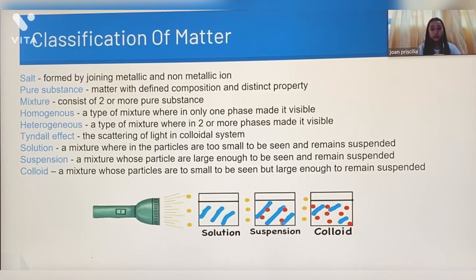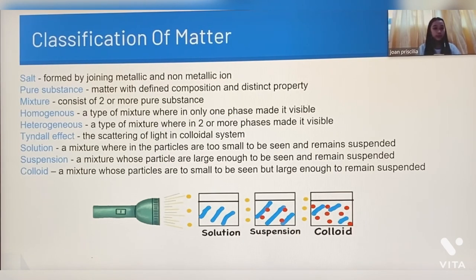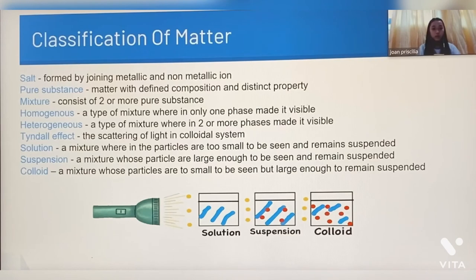Pure substance is matter with defined composition and distinct property. Mixture consists of two or more pure substances. Homogeneous mixture is a type of mixture wherein only one phase makes it visible. Heterogeneous mixture is a type of mixture wherein two or more phases make it visible.